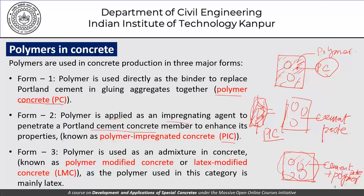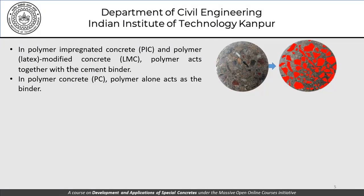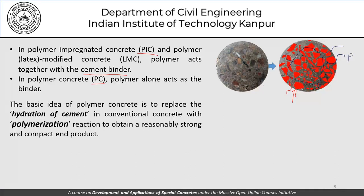In PIC and LMC, the polymer acts together with the cement binder — in PIC it is largely limited to the surface, and in LMC it is throughout the entire body of concrete. In polymer concrete, polymer alone acts as the binder. The basic idea of polymer concrete is to replace the hydration of cement in conventional concrete with a polymerization reaction. We will touch upon the polymerization reaction and learn how it produces a reasonably strong and compact end product.